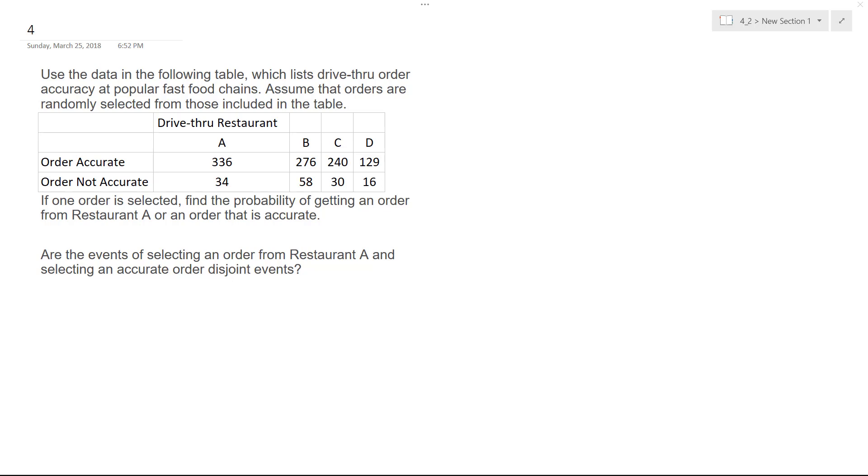So, the first portion is: if one order is selected, find the probability of getting an order from restaurant A or an order that is accurate.